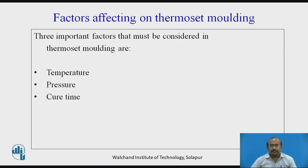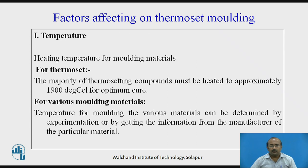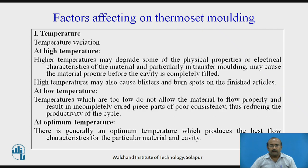Factors affecting thermoset molding. Three important factors that must be considered in thermoset molding are temperature, pressure, and cure time. Regarding temperature: the heating temperature for molding material — for thermoset, the majority of thermosetting compounds must be heated to approximately 190 degrees Celsius for optimum cure. For various molding materials, the temperature can be determined by experimentation or by getting information from the manufacturer of the particular material. Temperature variations exist at high temperature, low temperature, and optimum temperature.